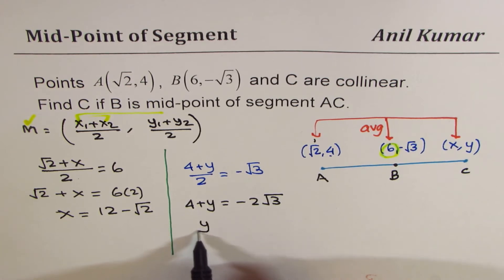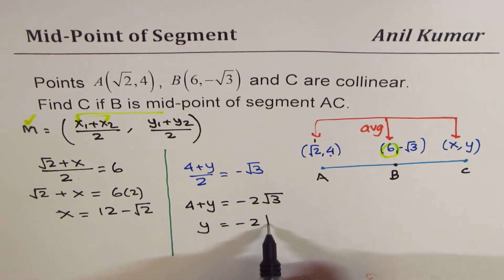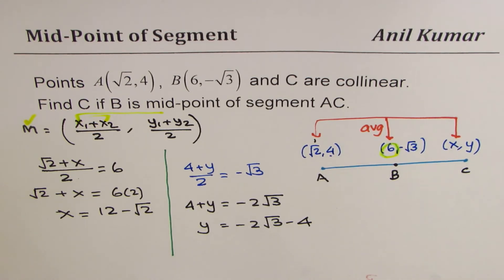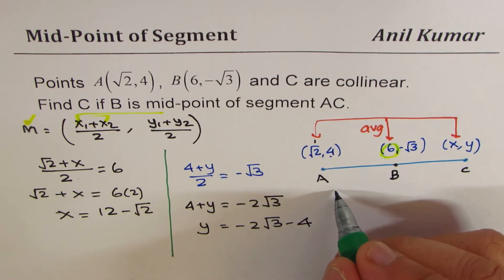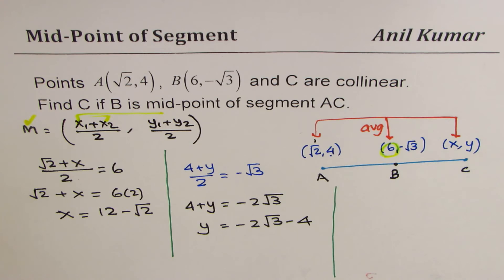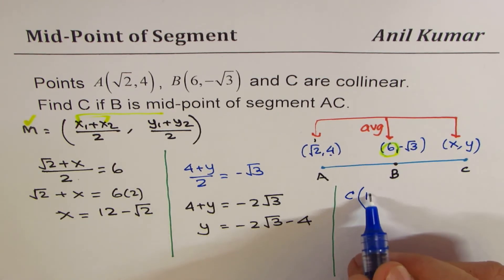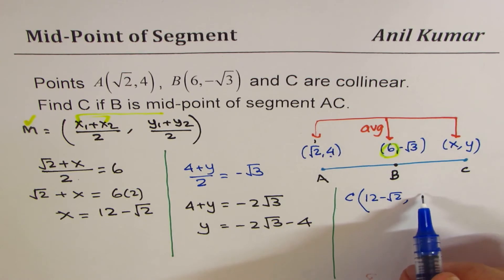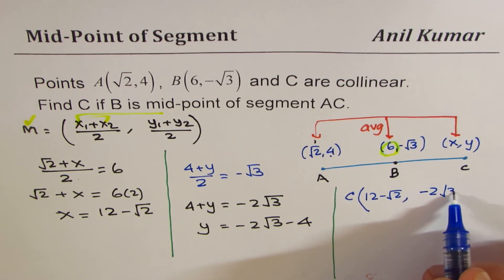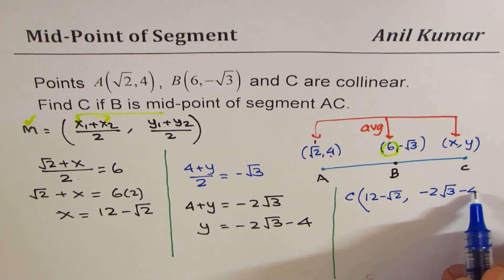And the value for y is -2√3 - 4. So that is the exact value of x and y. Now we can write down our answer, which is: coordinates of point C are (12 - √2, -2√3 - 4).